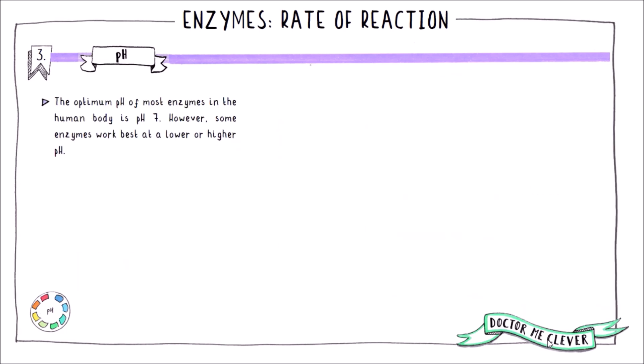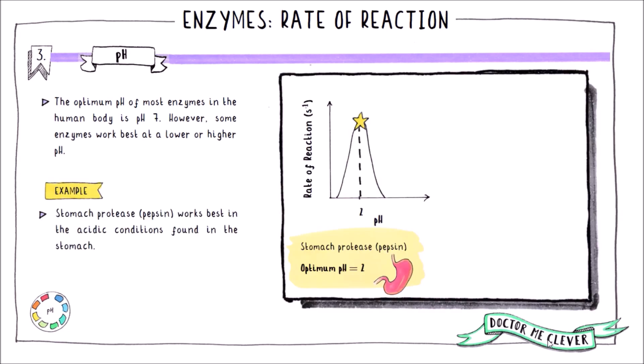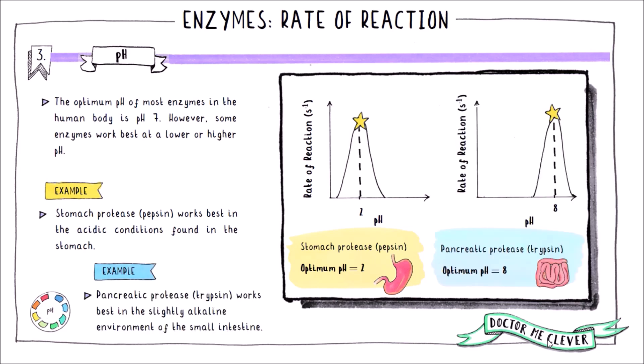Whilst the optimum pH of most enzymes in the human body is pH 7, some enzymes work best at a lower or higher pH. For example, the protease pepsin works best in the hydrochloric acid found in your stomach, which has a pH of about 2 — so the graph shifts to the left. On the other hand, the pancreatic protease trypsin works best in the slightly alkaline conditions of the small intestine, with an optimum pH of around 8, so the graph shifts to the right.